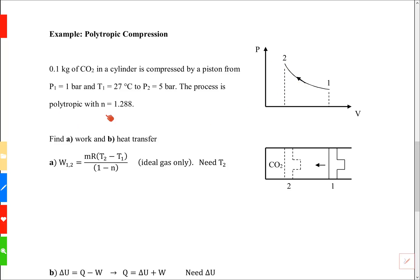We're told the process is polytropic with n equals 1.288. What exactly does that mean? Polytropic means that pressure times volume to the power n is a constant.